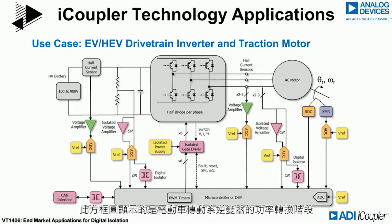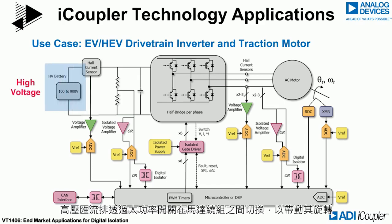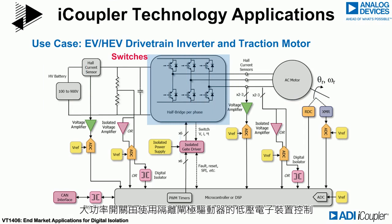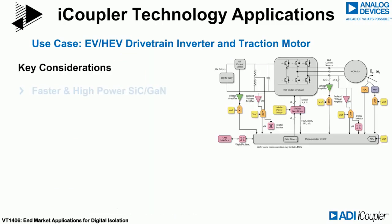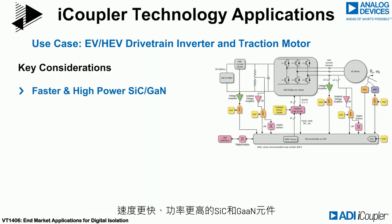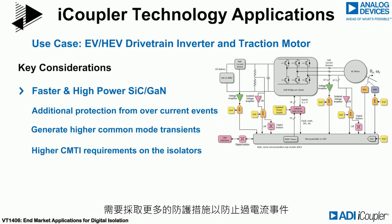This block diagram shows the power conversion stage for an electric vehicle drivetrain inverter. The signal chain is very similar for industrial motor drives. A high voltage bus is switched across the motor windings by high power switches to create rotation. The switches are controlled by low voltage electronics using isolated gate drivers. There are many other points throughout the system where measurement or control must be achieved using isolated communications devices. Faster and higher power SiC and GaN devices require more protection from overcurrent events.